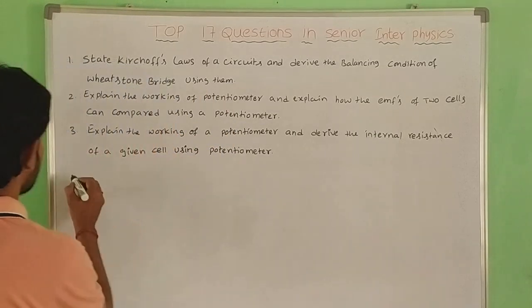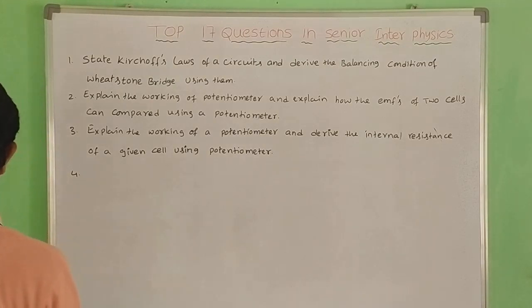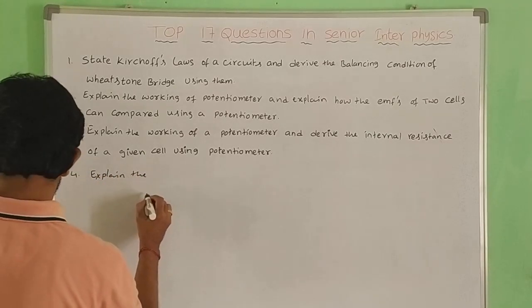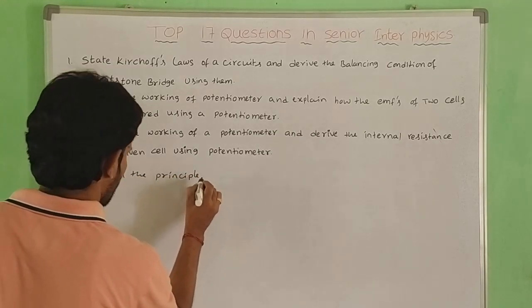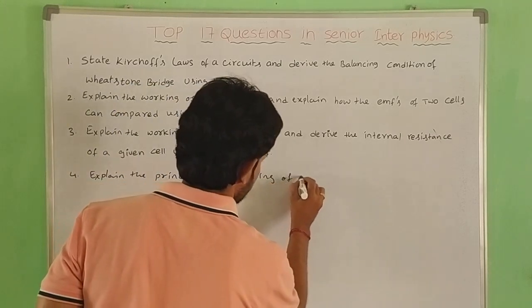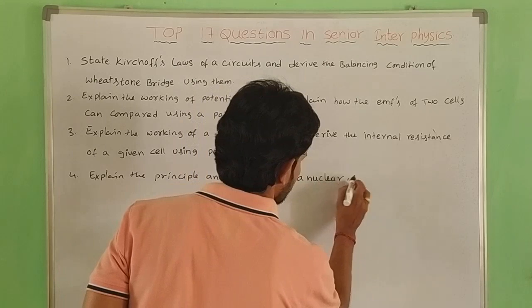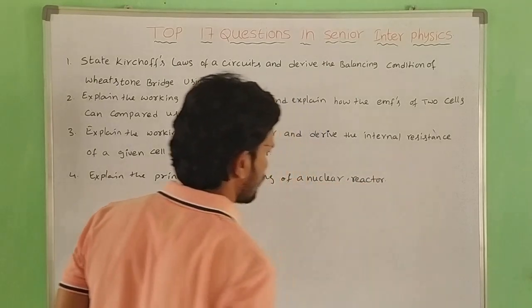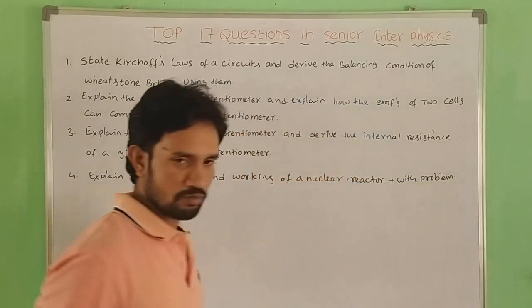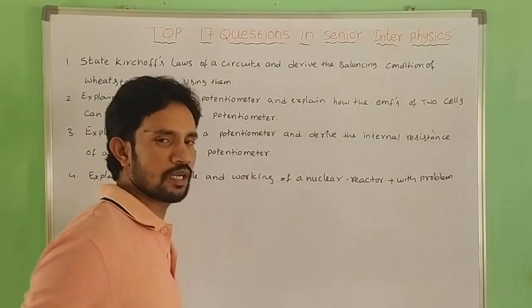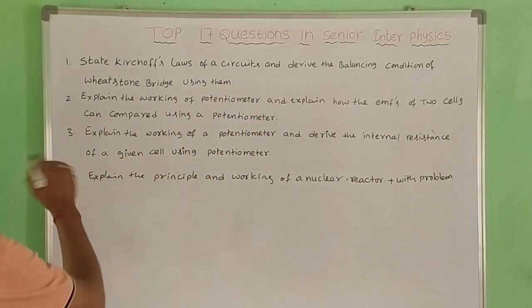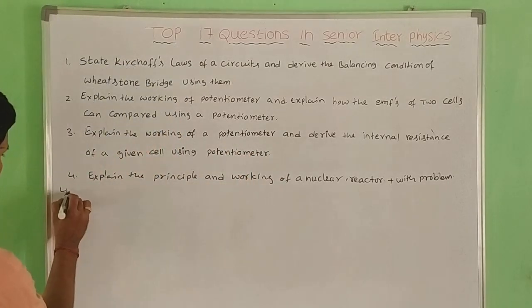Fourth question: Explain the principle and working of a nuclear reactor with problem. So students, four essay questions - two essay questions, eight marks each. Next are four marks questions.